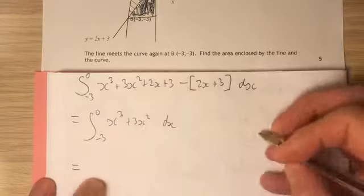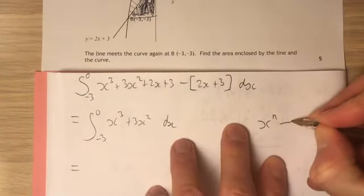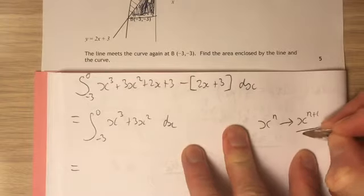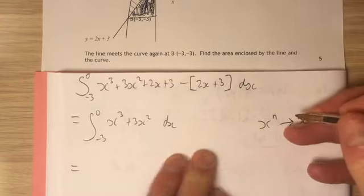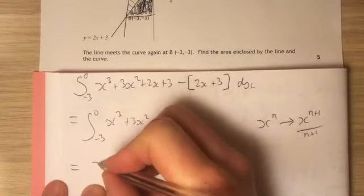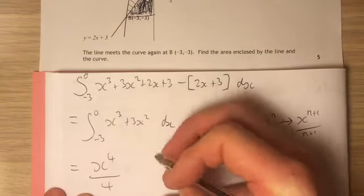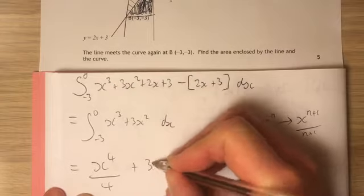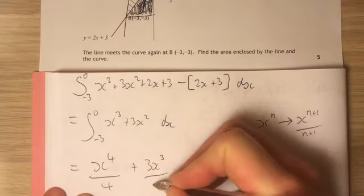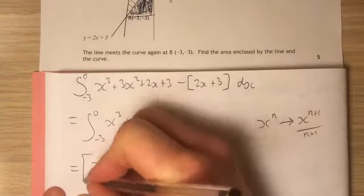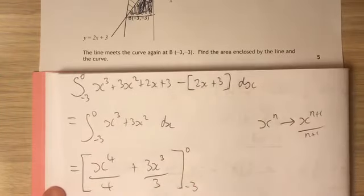Now we do the integrating. That's easy enough. We know that x to the n, what does it go to? It goes to x to the power of n plus 1 divided by n plus 1. So x cubed will be x to the power of 4 over 4. 3x squared will be 3x cubed over 3. Well, that's nice, isn't it? And that thing I'm going to evaluate between negative 3 and 0.